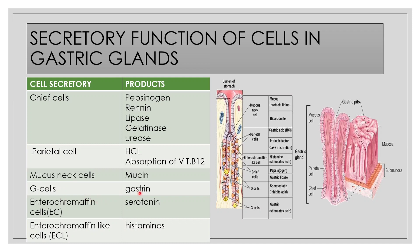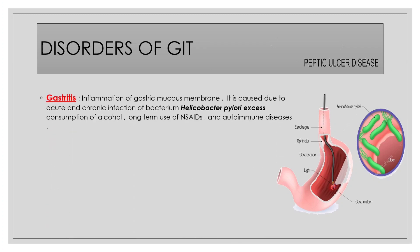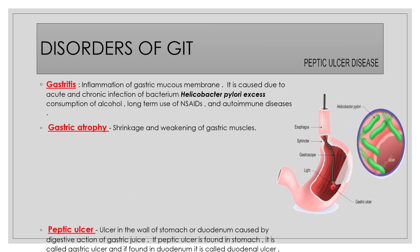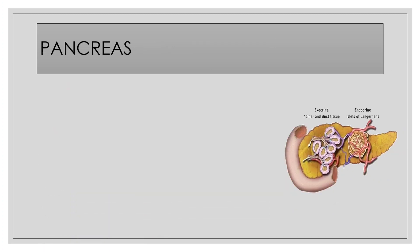Other gastric cells include G cells which secrete gastrin, enterochromaffin cells for serotonin, and enterochromaffin-like cells for histamine. Gastric disorders include gastritis, gastric atrophy, peptic ulcer, Zollinger-Ellison syndrome, and lots more.